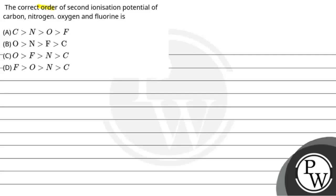Let's read the question. The correct order of second ionization potential of carbon, nitrogen, oxygen, and fluorine is? The correct order of this question is the second ionization potential of carbon, nitrogen, oxygen, and fluorine.